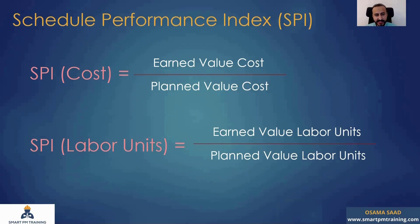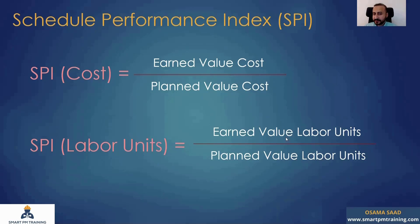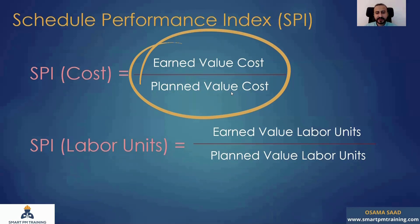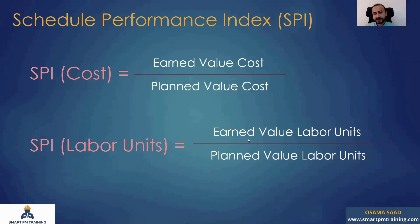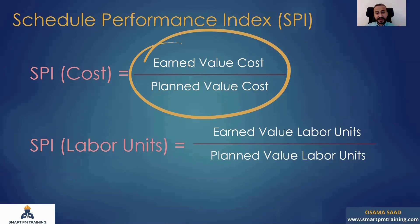Another factor is the Schedule Performance Index, or SPI. In Primavera, SPI appears as a column — there's an SPI for cost and an SPI for labor units. The formula is: earned value cost divided by planned value cost (or labor units equivalent). SPI ranges between zero and one typically. If SPI is zero, earned value cost is zero, meaning no progress at all.